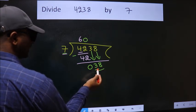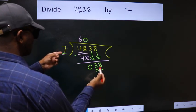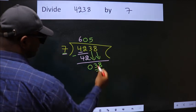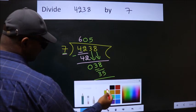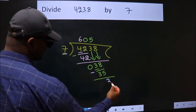A number close to 38 in the 7 table is 7 times 5, which is 35. Now we subtract. We get 3.